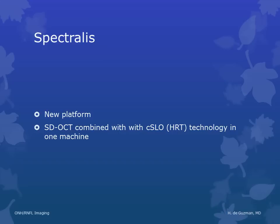The newest player on the market is the Spectralis. It's a new platform that combines spectral domain OCT with confocal scanning laser ophthalmoscopy, such as what you find in the HRT, into one machine. There are certain advantages from the combination of the two technologies, but because it's still relatively new and I am personally unfamiliar with this machine, the discussion of this machine will just have to wait for the future.